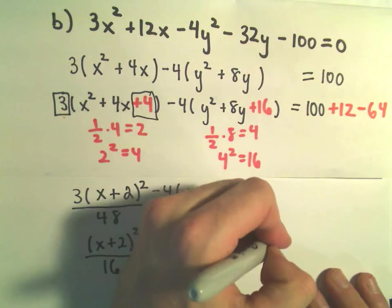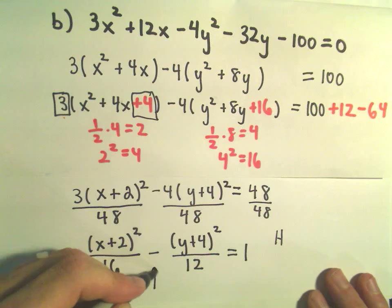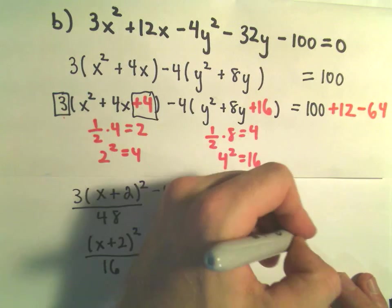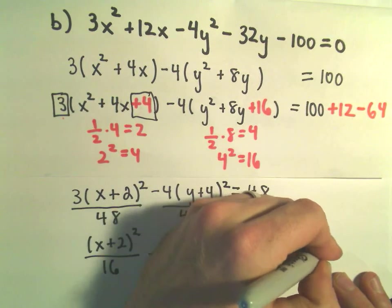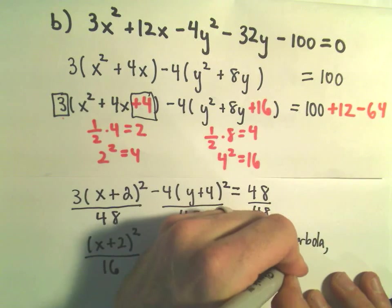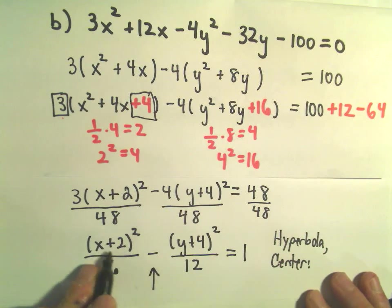So at this point, I recognize, because there's a minus sign in between these two terms, I recognize that it's a hyperbola, and it's going to have a center at the point negative 2, negative 4.